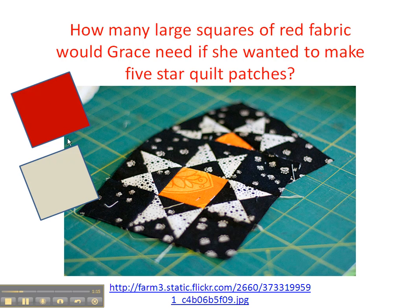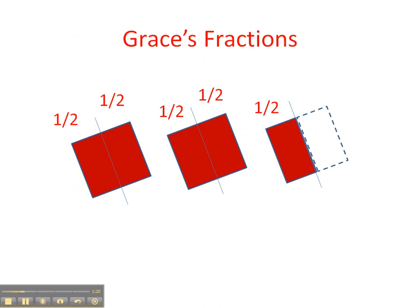Each half of this material can make one star. So she's going to make one star, two stars, another star, another star, and here's the last star leaving her with a half of a piece of material left over that she's not going to use. And that creates five star blocks.